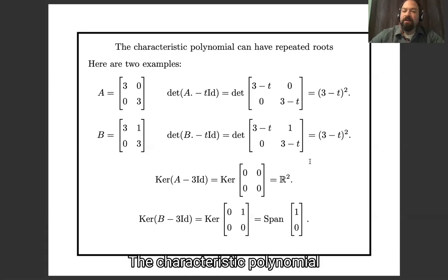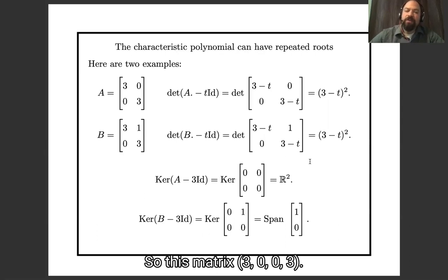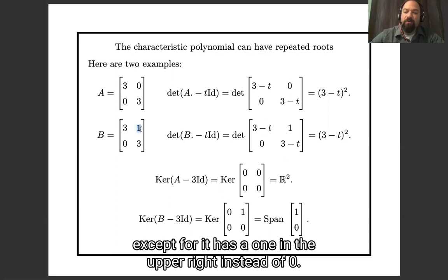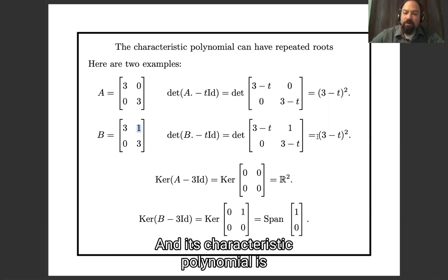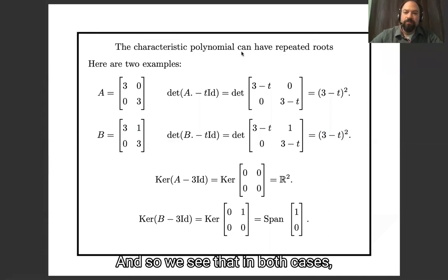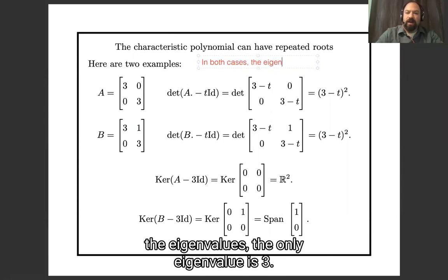Here's another thing that can happen: the characteristic polynomial can have repeated roots. Here are two different examples. Matrix A is 3, 0, 0, 3. Matrix B is almost the same, except it has a 1 in the upper right instead of a 0. Both matrices have the characteristic polynomial (3 minus t) squared, so in both cases the only eigenvalue is 3.